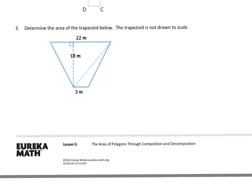Let's glance at 3. Because 3 looks kind of interesting. So we have to determine the area of the trapezoid below. And it's not drawn to scale. So I have 22 for all of this. So that's my base. There's my height.